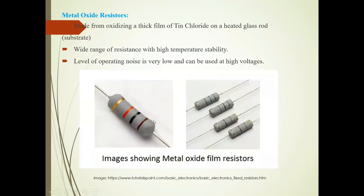Metal oxide resistors are made by oxidizing tin chloride on a heated glass rod, which is used as the substrate. These resistors have high voltage and high thermal stability, and the operating noise level is very low. They can also be used at high voltages.